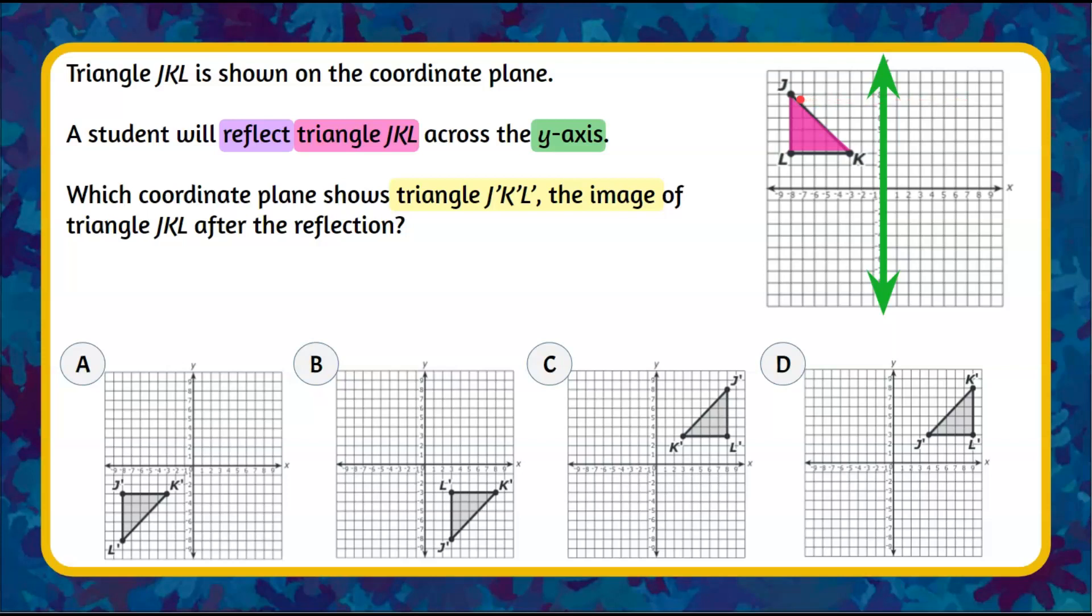So let's start with J. We're going to take point J, vertex J, and we're going to go the same distance to the right of the line of reflection. We're going to take K and go the same distance on the other side of the line of reflection and the same thing with L. We're going to go the same distance on the opposite side of the line of reflection.